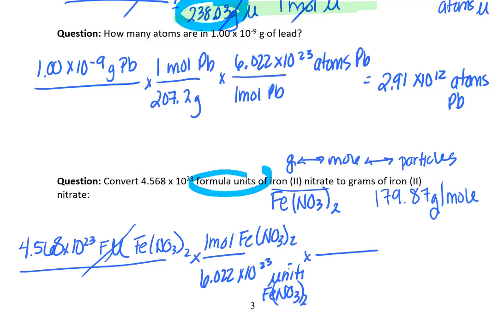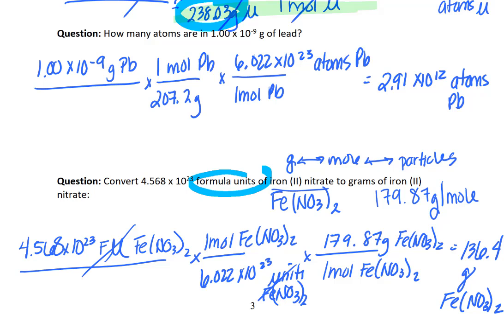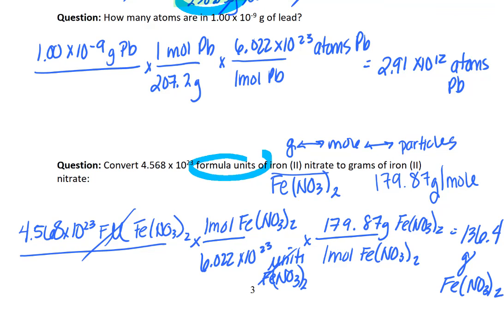Then once our formula units have canceled now we're in moles and it starts to get more comfortable because we can go from moles directly to grams with our molar mass. So, one mole of Fe(NO3)2 to 179.87 grams of Fe(NO3)2. When I calculated this I got 136.4 grams of iron to nitrate. Alright, so that's between mass and particles. Let's go to what's next.